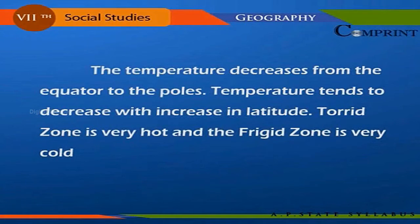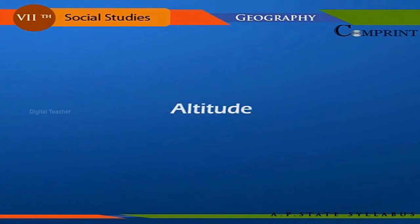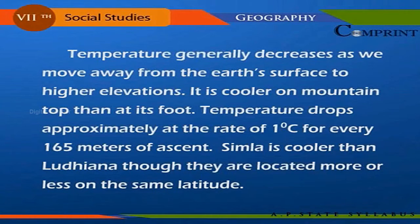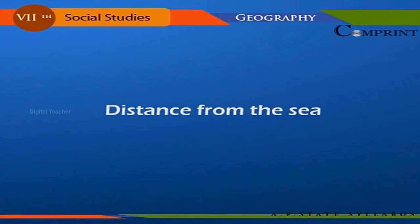The torrid zone is very hot and the frigid zone is very cold. Temperature generally decreases as we move away from the earth's surface to higher elevations — it is cooler on a mountain top than at its foot. Temperature drops approximately at the rate of 1 degree Celsius for every 165 meters of ascent. Shimla is cooler than Ludhiana though they are located more or less on the same latitude.